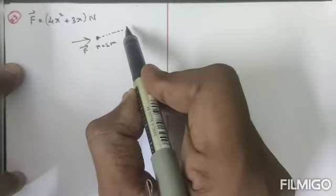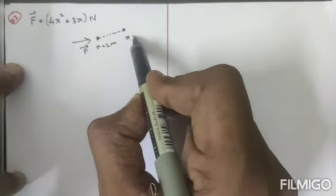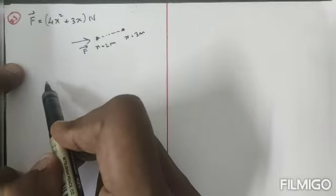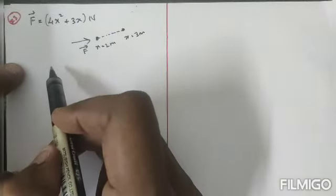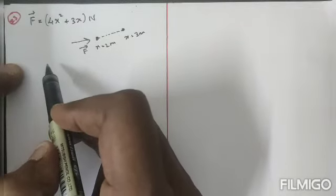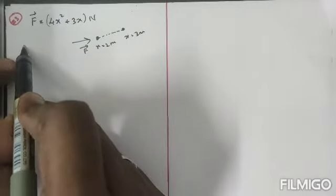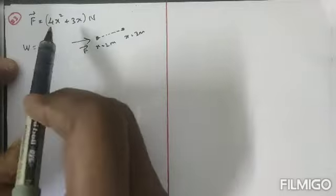then it is displaced to x = 3 meter distance. So in this situation they are asking for work done. So we know the formula: work done is equal to force into displacement. So work done is equal to